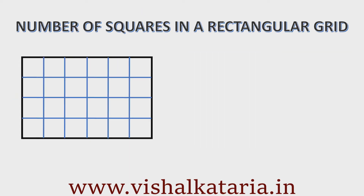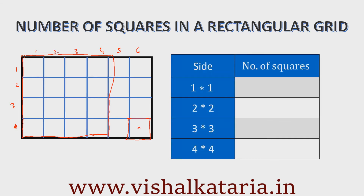Now let's take another example — a rectangular grid which has dimensions 6 units by 4 units. The different kinds of squares we can have range from the smallest, which is 1 unit by 1 unit, to the biggest, which is 4 units by 4 units. This means we will have 1 by 1, 2 by 2, 3 by 3, and 4 by 4 squares in this rectangular grid. Now the question is how many of each?